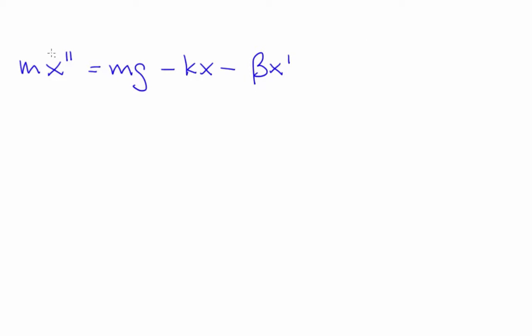So here's the equation. This term is gravity. This term is the spring force. This term is friction. And this term is MA. And this over here is the sum of the forces on the mass.